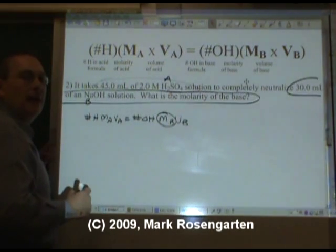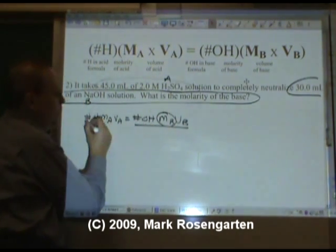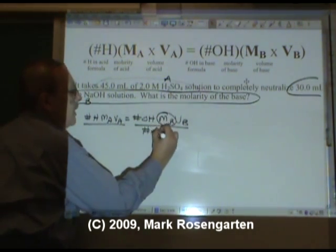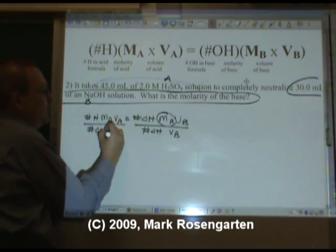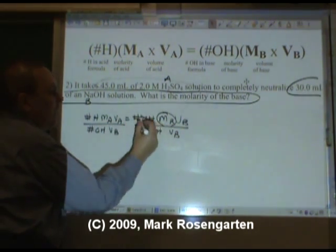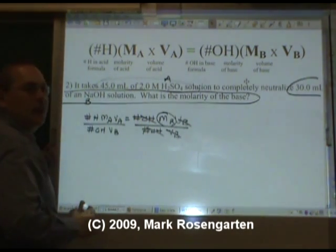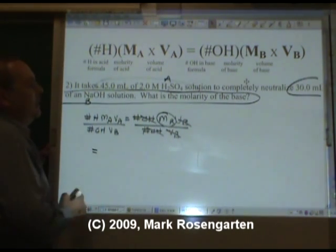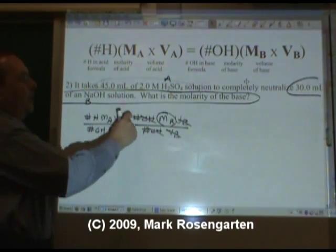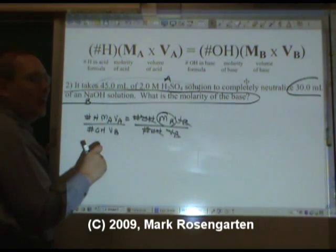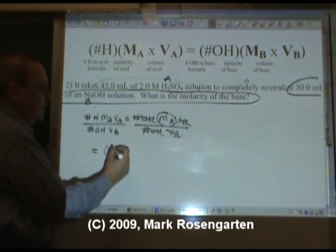We need to find MB, molarity of the base. So we divide both sides by number of OH's, VB. Say goodbye, say goodbye, now you're ready to solve the problem. How many hydrogens are there in the formula of the acid H2SO4? Well that would be 2 I guess.